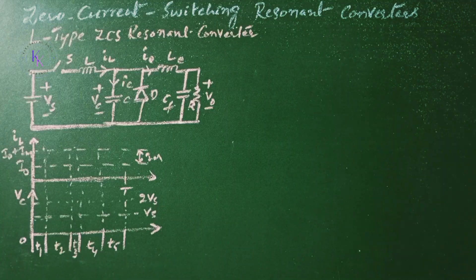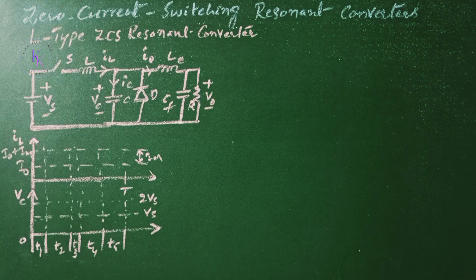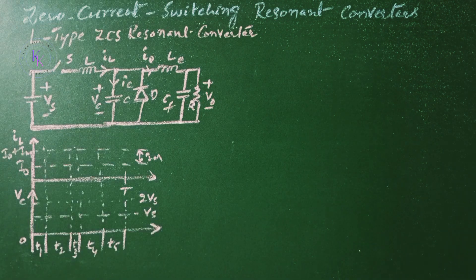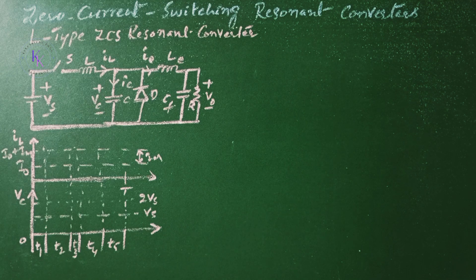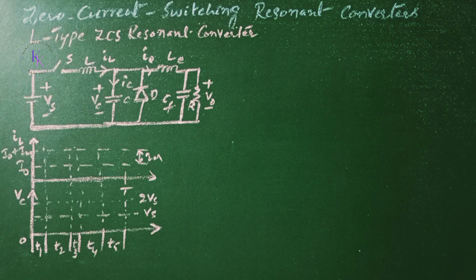Now let us see the L type zero current switching resonant converter. This is the main circuit of the ZCS L type, and the circuit operation can be divided into five modes. We shall redefine the time origin T equals zero at the beginning of each mode.